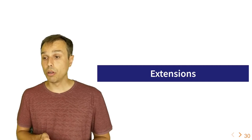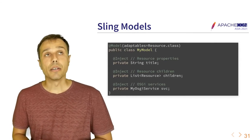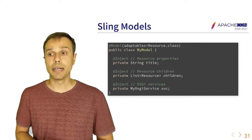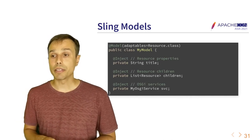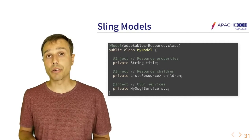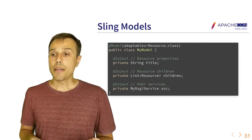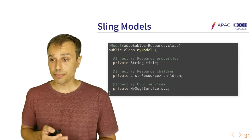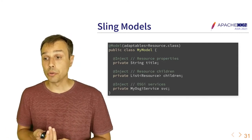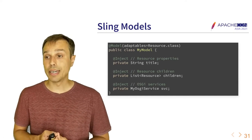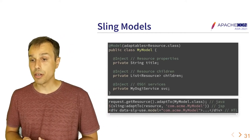Sling Models is a powerful shorthand for adaptTo and more. Instead of writing a conversion implementation, you declare how the conversion should happen. For example, MyModel is adapted from a resource — the title is injected from resource properties, the children property from child nodes, and you can also inject OSGi services, all without writing an adapter factory. Sling Models can be used via adaptTo in Java, JSP, or HTL — very compact.